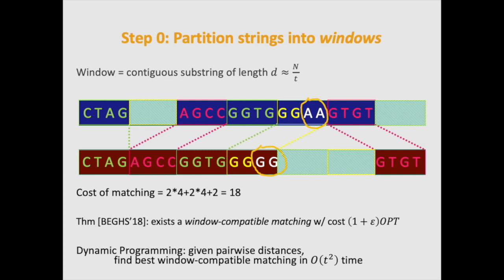Furthermore, if we know the pairwise distances between all the windows, we can compute the optimal window compatible matching in order t squared time, where t is the number of windows.